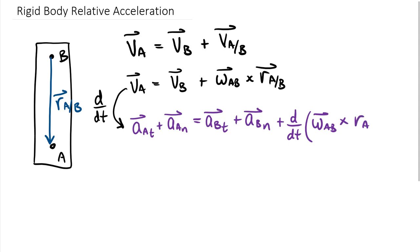So we'll use purple here for acceleration terms. Acceleration of A tangential plus acceleration of A normal equals acceleration of B tangential plus acceleration of B normal, plus the time derivative of the cross product term omega of AB crossed with R of A relative to B. There are two vectors inside this cross product and we want to take the time derivative of both, governed by the product rule — the same product rule from calculus: first term times the derivative of the second, plus the derivative of the first term crossed with the second term.